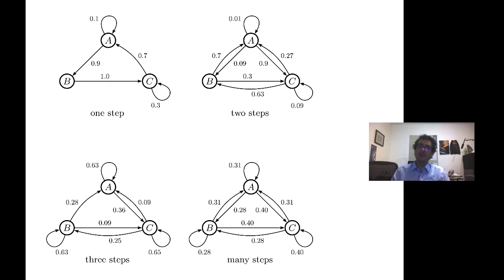If you think about how many parameters you need to describe the model at the one-step case, well, you have three states and each state has three transition probabilities. But since probabilities have to sum to one, in fact, for each state you only have two free parameters. So you have three states, two free parameters each. There's six parameters that describe an arbitrary Markov model on three states.